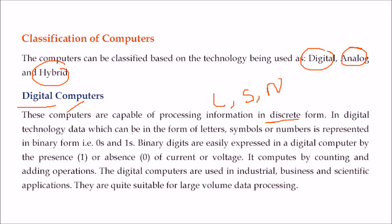These binary digits are easily expressed as presence, say 1, or absence, say 0. For example, 0 volts can be taken as 0, or plus 5 volts can be taken as 1, because a computer is an electronic device and it works on voltages.